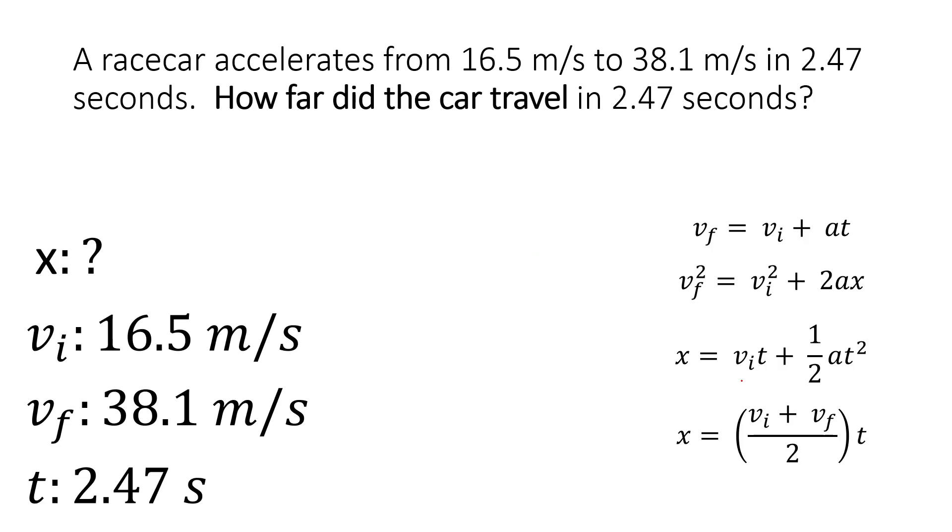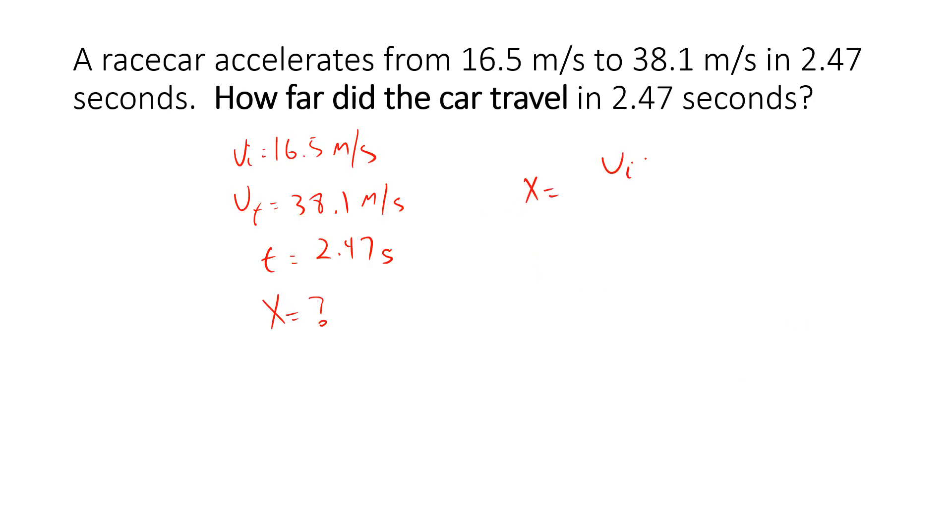So there's our equation: x equals vi plus vf over 2 times t. Be careful, there are some equations that have a negative here - this is a different equation. We get vi is 16.5 plus vf is 38.1 over 2, and we multiply that by 2.47.